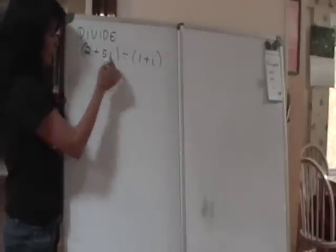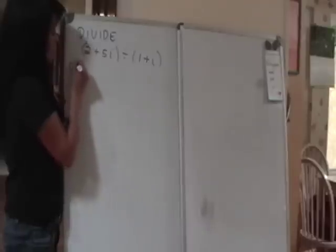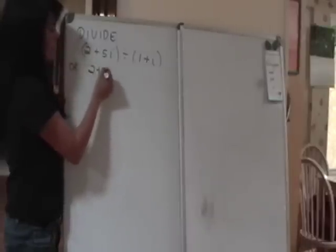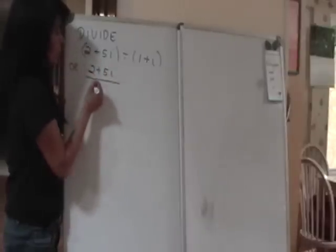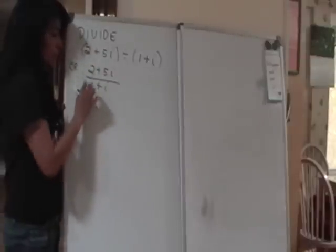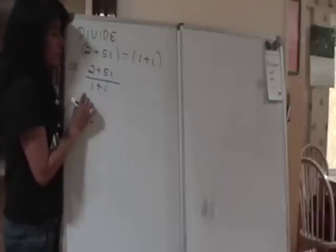In fact, probably you won't see the problem like this, maybe you will see the problem written like this, 2 plus 5i over 1 plus i. So how do we actually carry out the division?